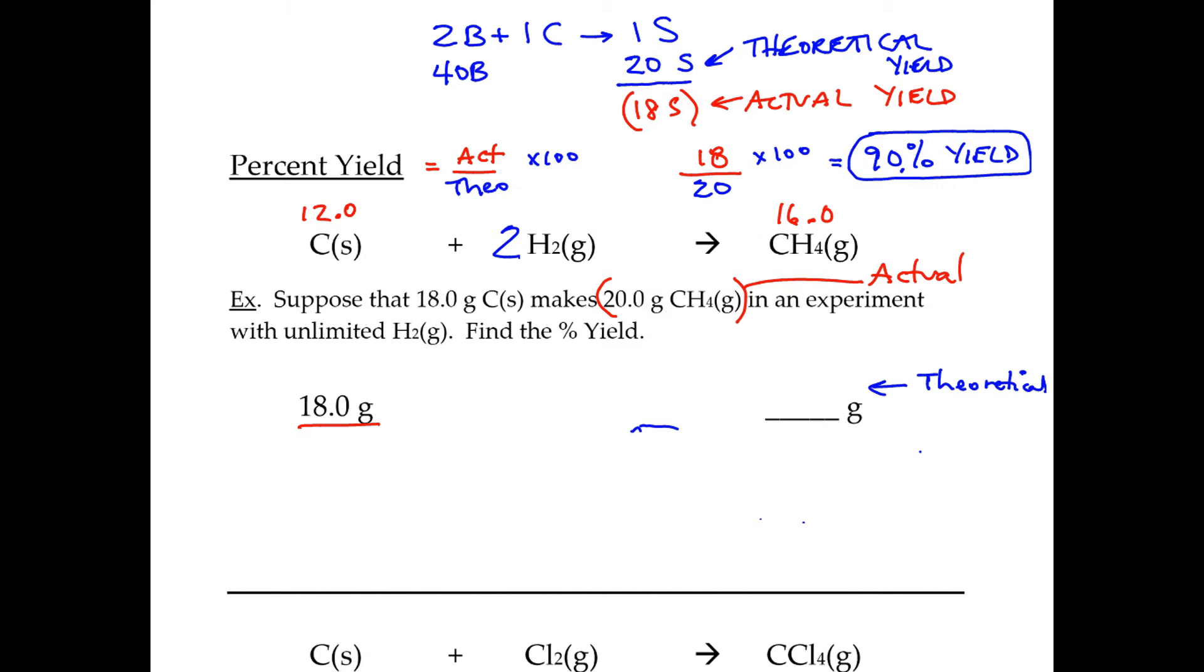So unlimited hydrogen means you have as much as you want. We're going to do 18 divided by 1 divided by 12 times 16 times 1. And that's going to give us an answer of 24. So we're supposed to make 24 grams of the methane, that's our theoretical. So how do we get the percent yield? We take actual over theoretical. So we take 20, the actual, divided by the theoretical, which was 24.0 times 100, and that's going to give you an 83.3% yield.